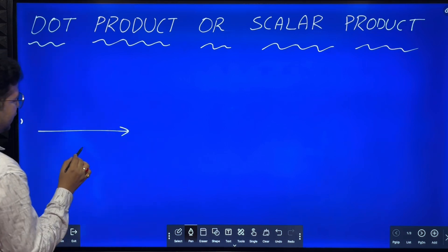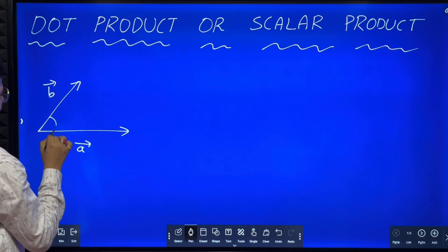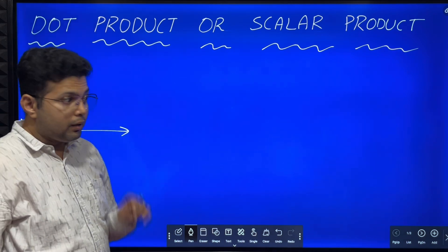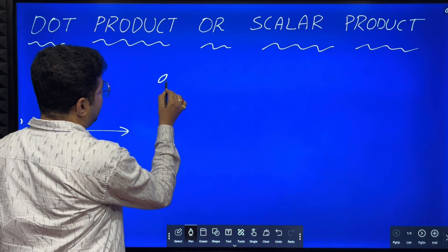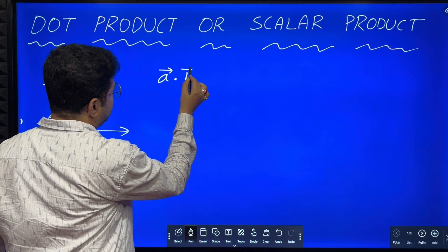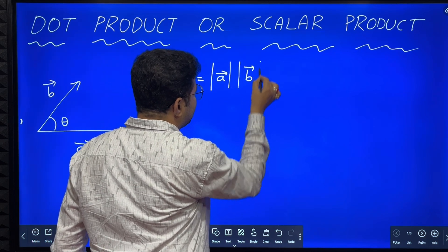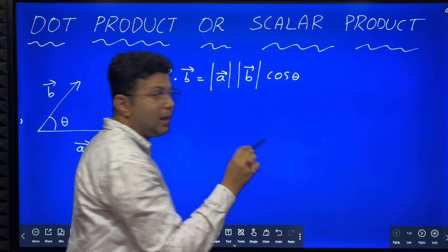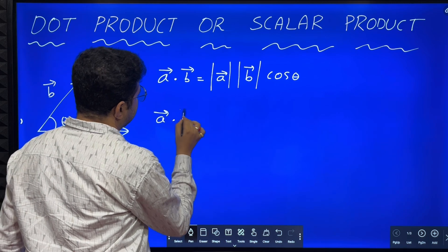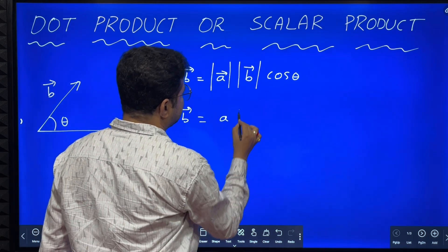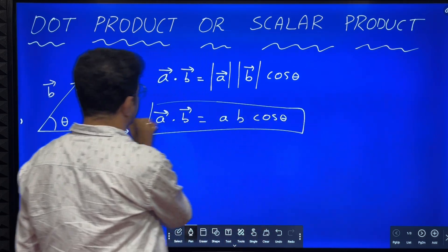Let me consider a vector A and one more vector B. Say the angle between A and B is theta. The dot product of two vectors A and B is given by: A dot B is equal to magnitude of vector A into magnitude of vector B into cos theta. Simply, magnitude of A is written as A, magnitude of B as B, so A dot B is defined as A into B into cos theta.